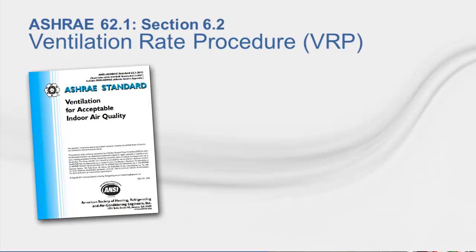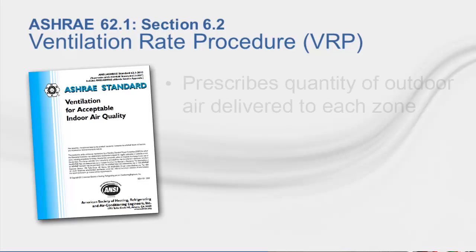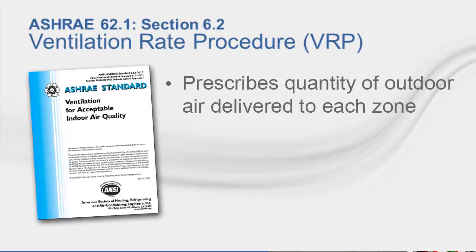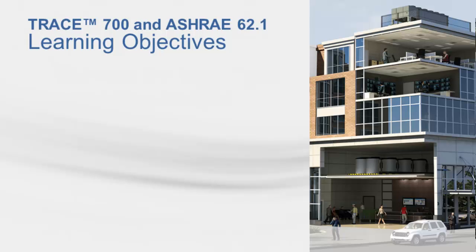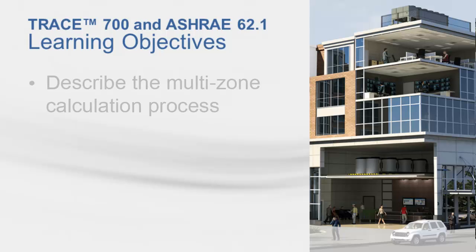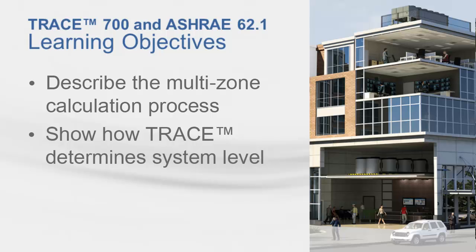Specifically, I'm going to be talking about the ventilation rate procedure, which is covered in Section 6.2 of ASHRAE Standard 62.1. The standard prescribes the quantity of outdoor air that must be delivered to each zone based on the expected use of that zone, and then prescribes how to calculate the outdoor air flow needed at the system level intake. In today's video, I will show you the process for calculating the outdoor air flow for a multi-zone system, walk you through a hand calculation, and show how TRACE determines zone level and system level outdoor air fractions.